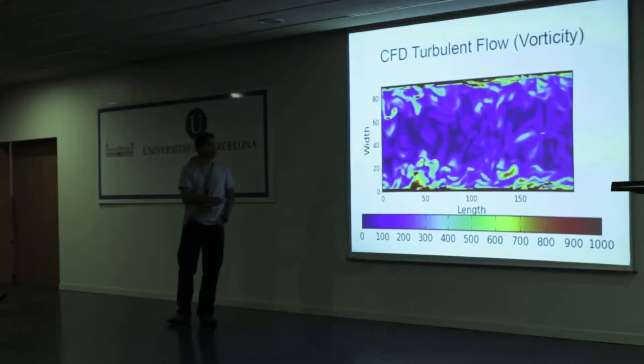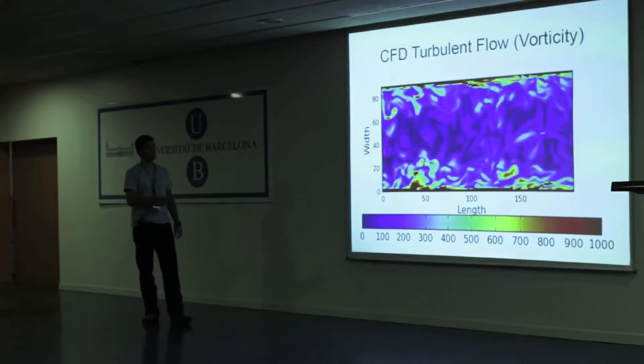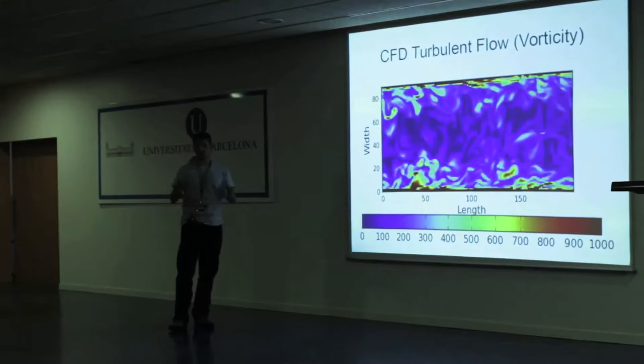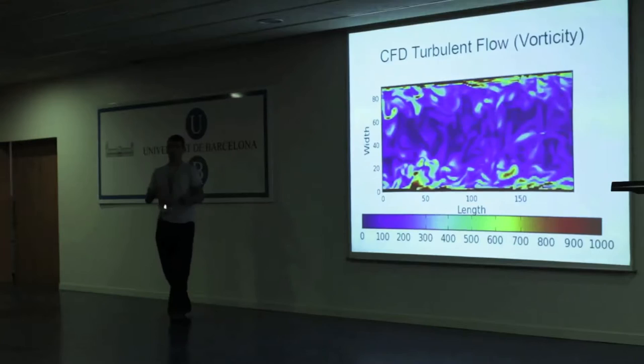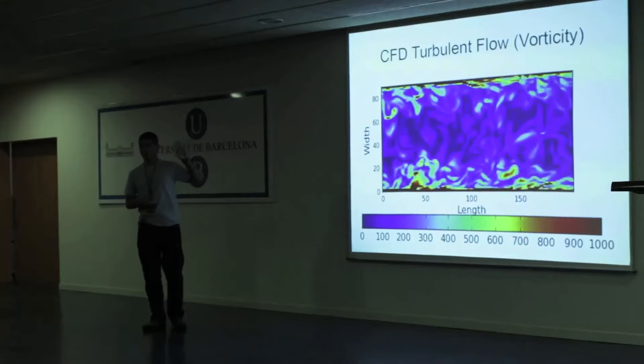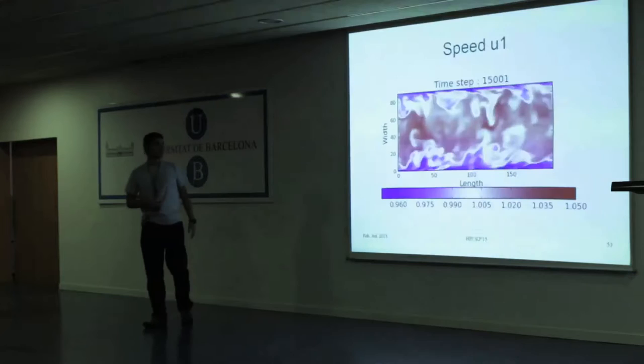I want to clarify that vorticity is not actually a data set stored in memory - you don't have a pointer to a vorticity table. This is only plotted for visualization purposes. What you actually have in memory are velocities: velocity in x, y, and z dimensions. From these three velocities you compute the vorticity you see at the end. But what can actually be corrupted is the velocities, not the vorticity.